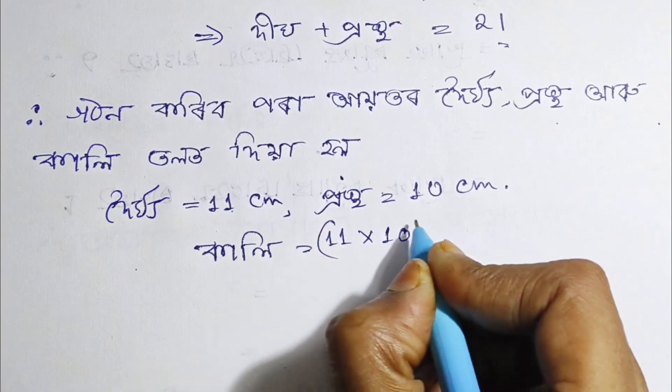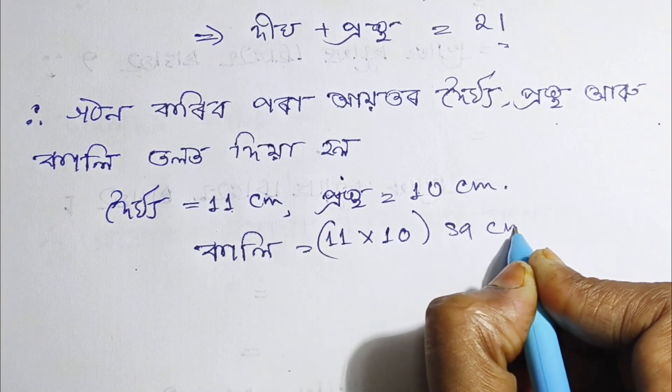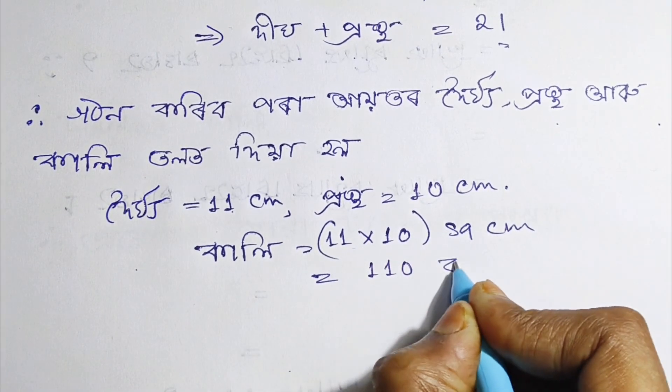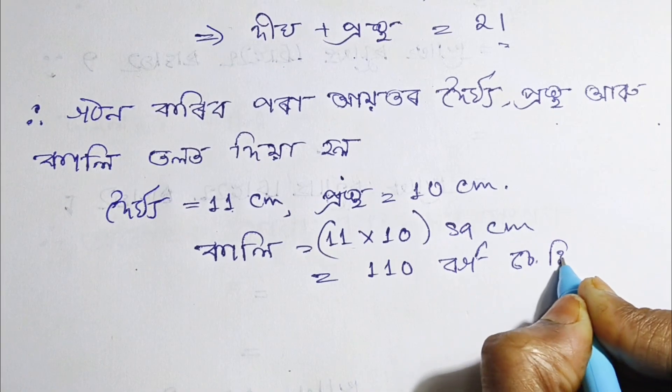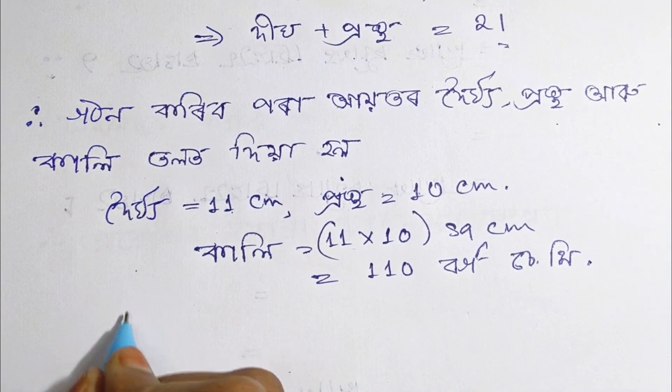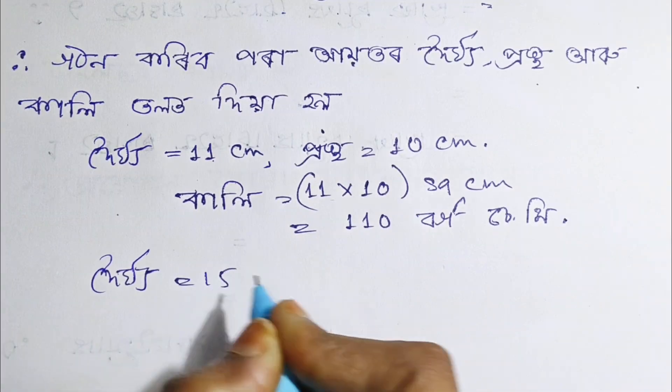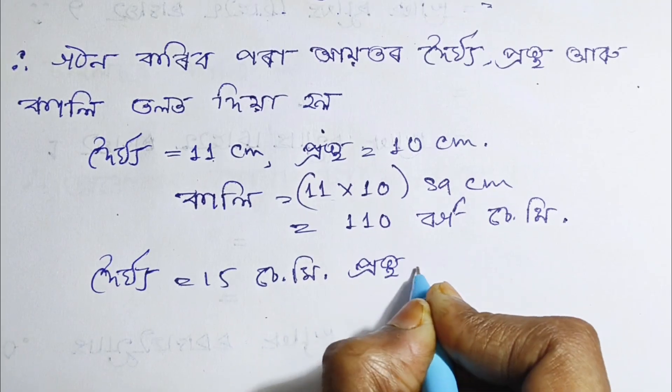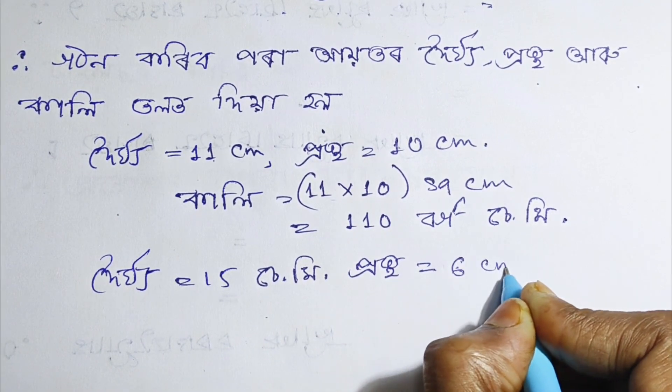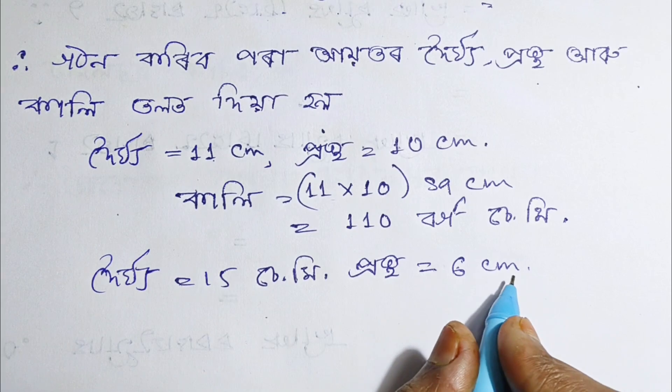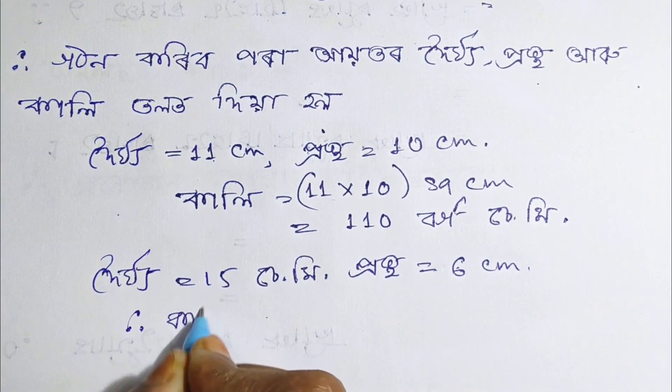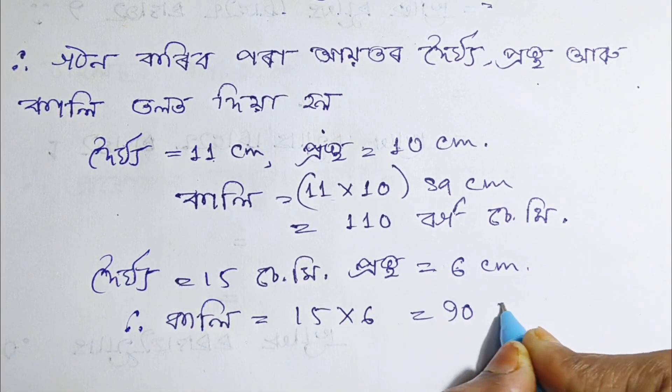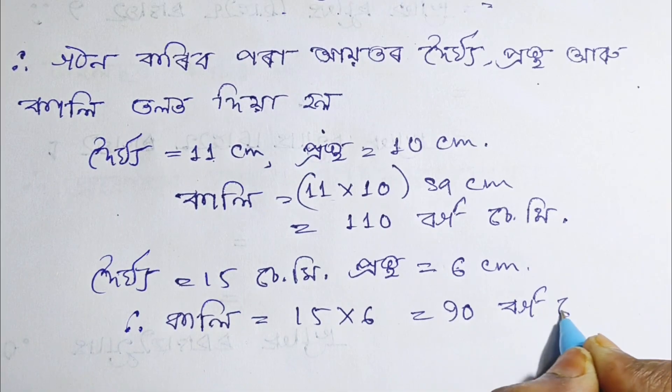If the length is 15 cm, the breadth will be 6 cm. The area will be 15 times 6 equals 90 square centimeters.